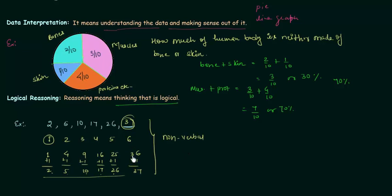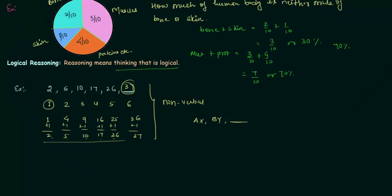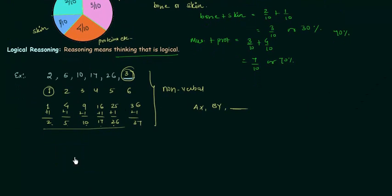We can also have a problem like AX, BY, and then we have to find out the next character. We can also divide logical reasoning into 5 different types.